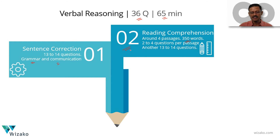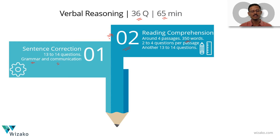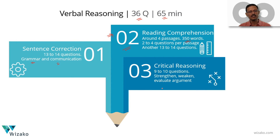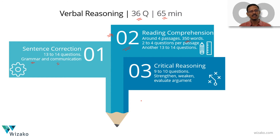Reading comprehension is one area where extent of preparation and scores are not necessarily correlated. Those with better reading habits will score here without much effort; others need to put in a lot of effort. The third variant is critical reasoning — about 9 to 10 questions based on logical arguments. You'll get questions asking you to strengthen an argument, weaken an argument, infer and conclude, evaluate an argument, and similar tasks.